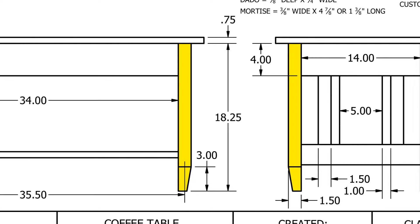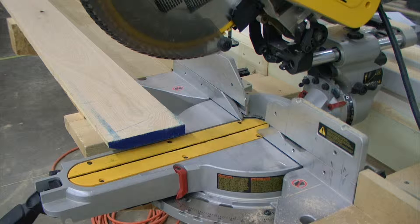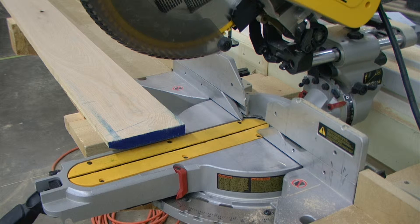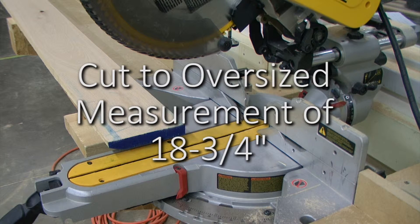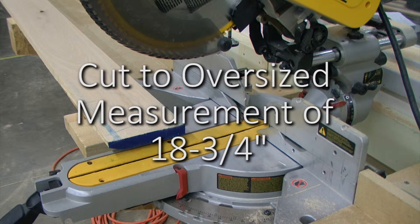Although the finished length for our coffee table legs is 18 and 1/4 inches, I'm going to initially cut my legs to an oversized measurement of 18 and 3/4 inches.